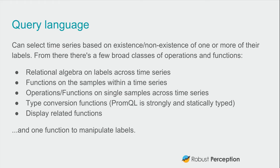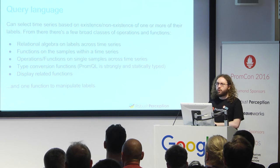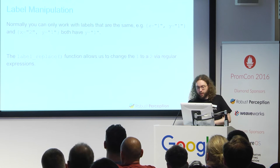The query language selects time series based on the existence and non-existence of these labels. From there, there's a whole pile of operators and functions. There is relational algebra based on the labels across multiple time series. You can do within one time series, you can slice the other way and do functions on samples within them. There are operations and functions on single samples across time series such as aggregation, type conversion functions — as we know PromQL is both strongly and statically typed — and some display-related functions. There's also one function to manipulate labels.